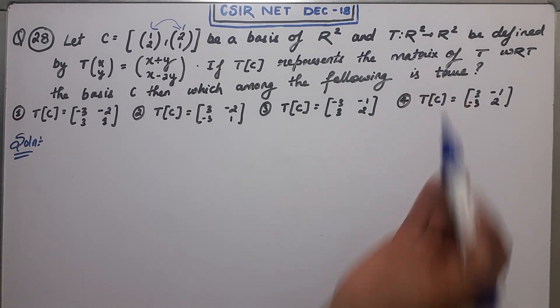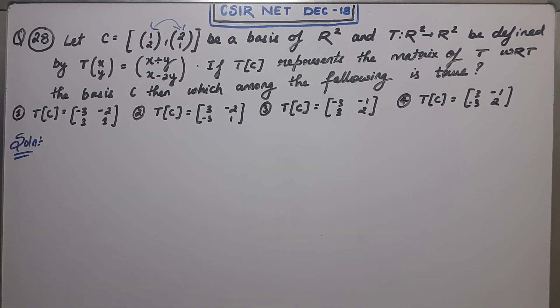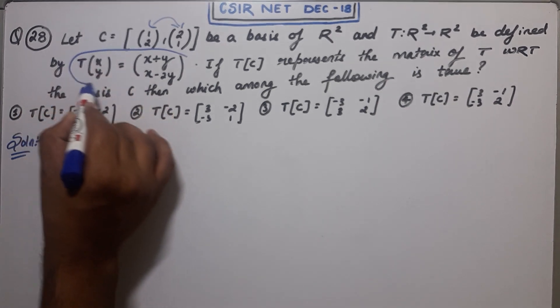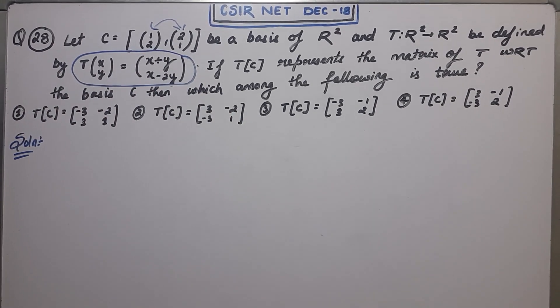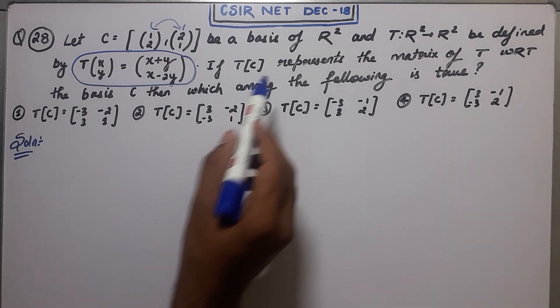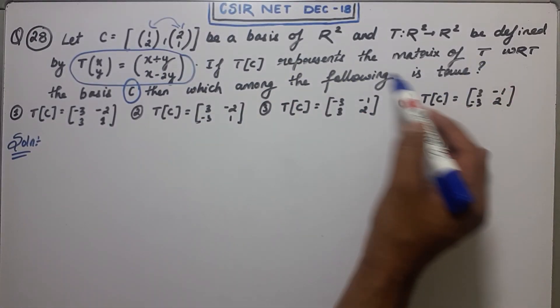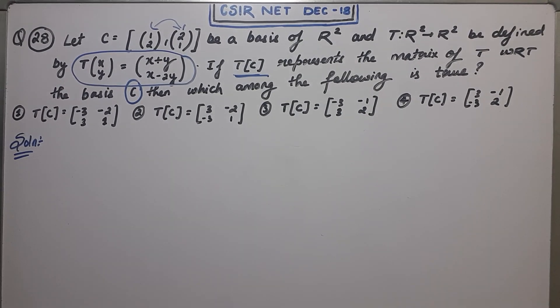And T: R squared to R squared is a transformation, and it is defined like this. T is a transformation which is given by this formula. So they are saying that if Tc represents the matrix of T with respect to the basis C, then which of the following is true?